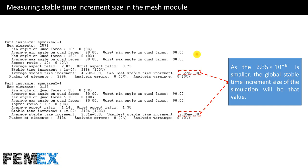In this model, I have used the verify mesh tool in the mesh module to measure the stable time increment size of each of the parts of the specimen, and this is its report. In part 1, the smallest stable time increment is this value, and in part 2 the smallest stable time increment is this value. As this value is smaller than the other, the global stable time increment size of the simulation will be this value.